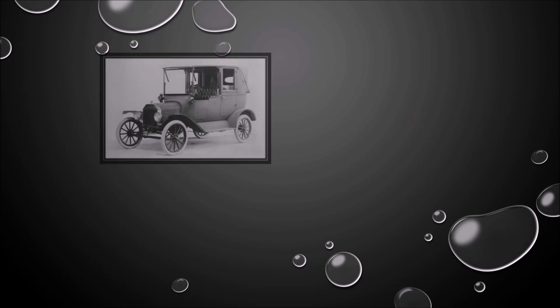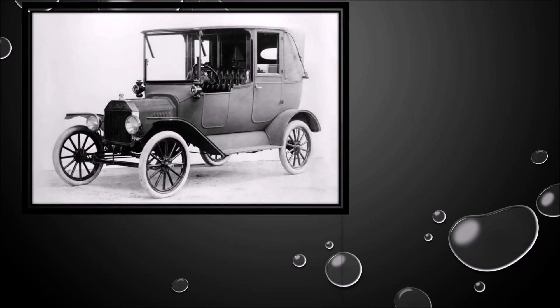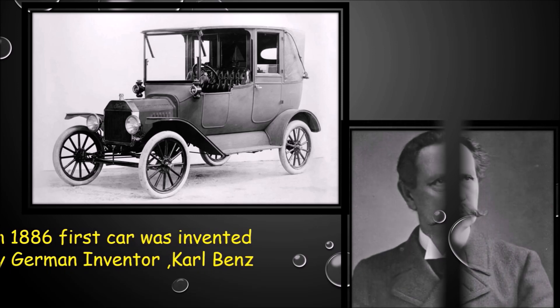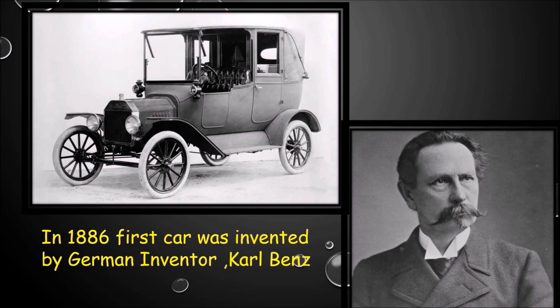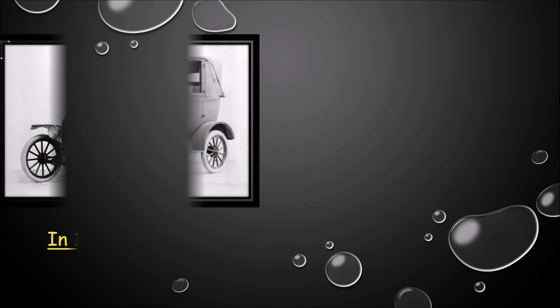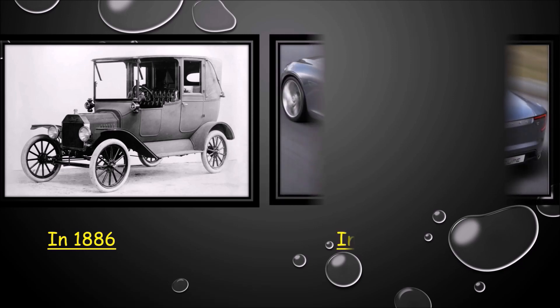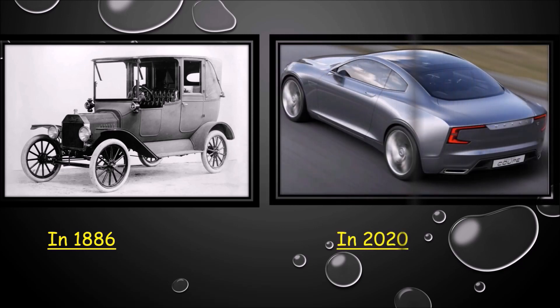Our next invention is a road mode of transport. The first car was invented by Carl Benz, a German inventor. He invented his first car in 1886, which makes our life easier and faster. In 1886, the first model of car looked like this, and in 2020 we are using these types of cars and various other variations.